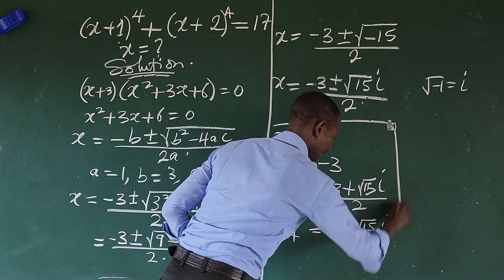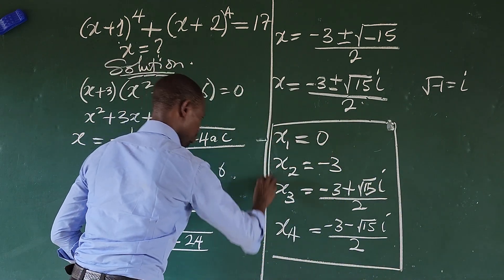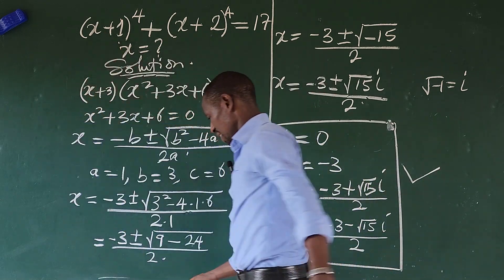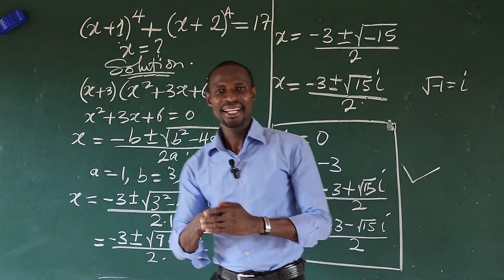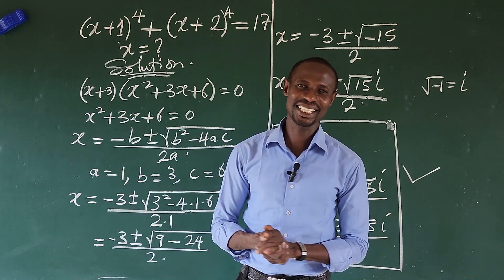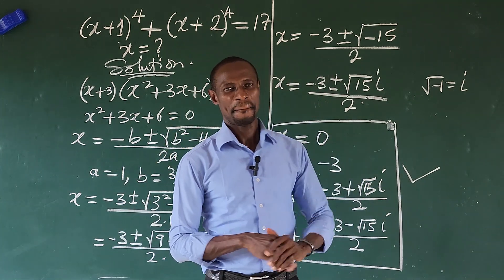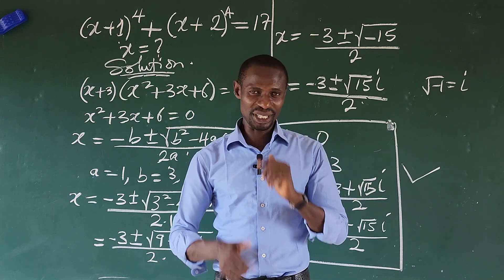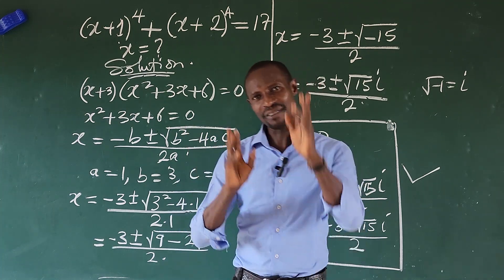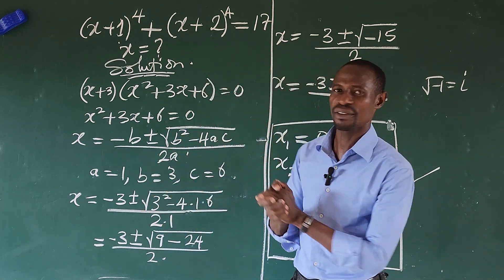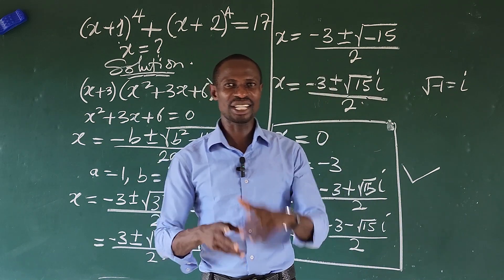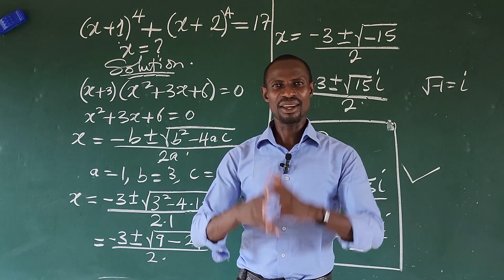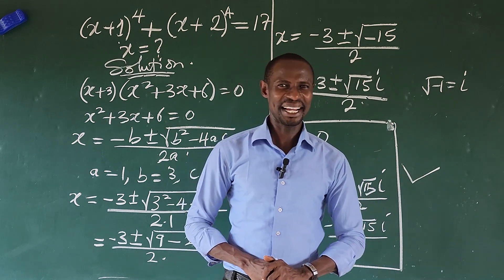So the four roots that satisfy the original equation are: x1 equals 0, x2 equals minus 3, x3 equals minus 3 plus the square root of 15 iota all over 2, and x4 equals minus 3 minus the square root of 15 iota all over 2. This brings us to the end of this nice exponential challenge. If you learned something from this video tutorial, give it a thumbs up. If you have a better or shorter way of solving this, drop it in the comments. Remember, Jake loves you. All of us at OnlineMaskTV love you. Bye for now.